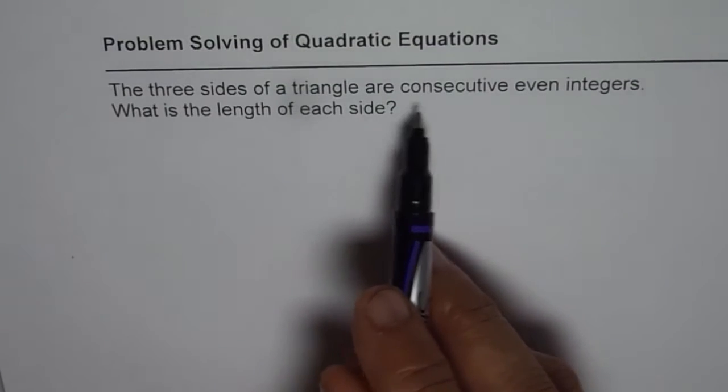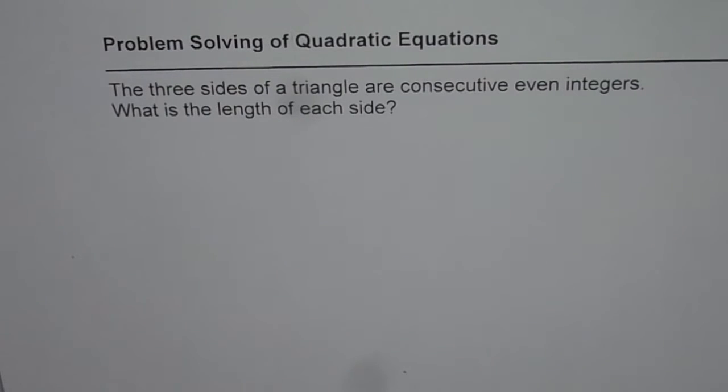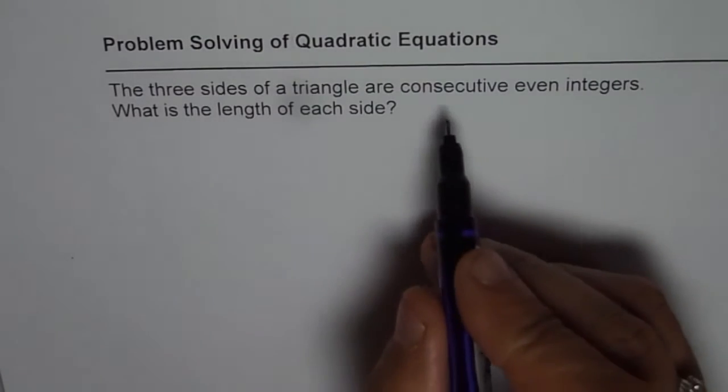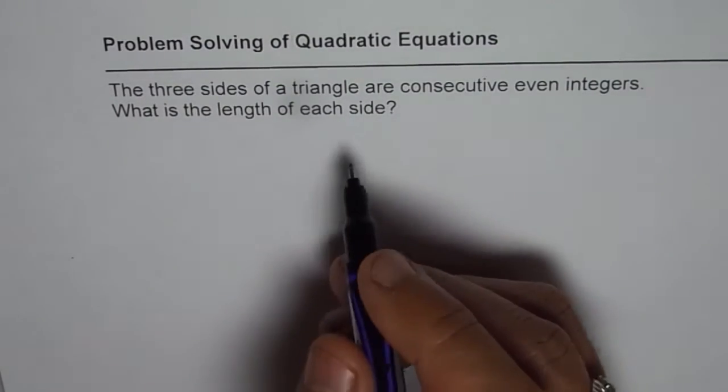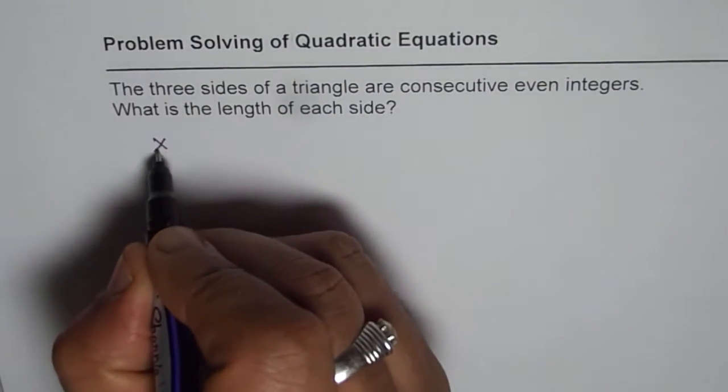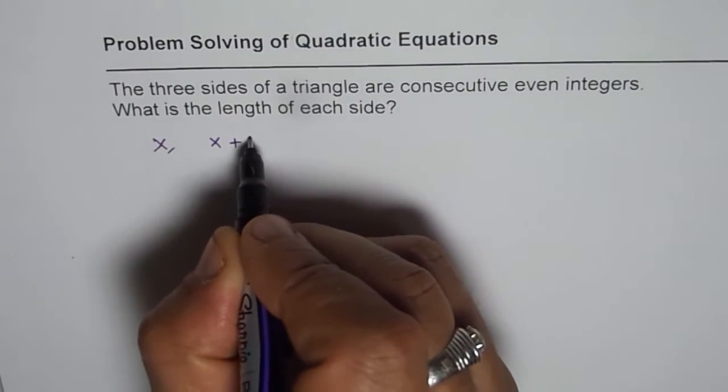the three sides of a triangle are consecutive even integers. What is the length of each side? When we say consecutive even, it means the sides could be x, x plus 2.